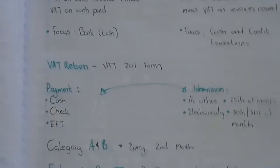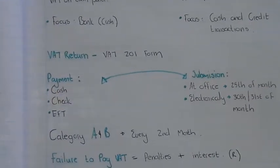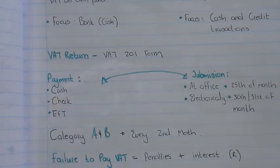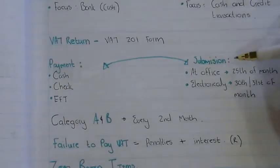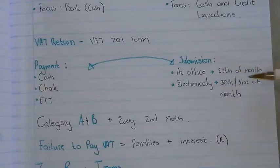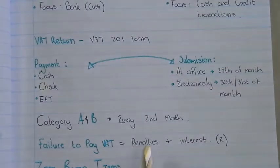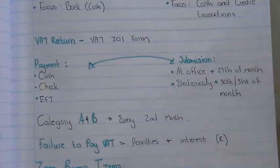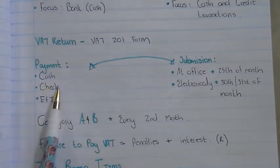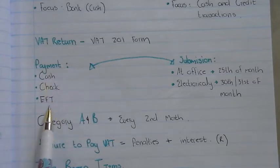When doing your VAT, you will have to fill in a VAT return — a form called a VAT 201 form. When submitting the form at the office, it is due on the 25th of each month. For electronic submission, it is due on the last day of the month — the 30th, 31st, or in February the 28th or 29th. Payment must accompany the submission and can be made in cash, cheque, or electronic funds transfer.